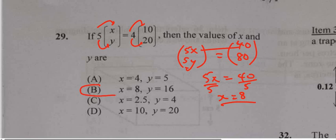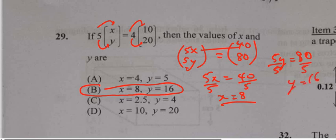Now this is the only option with 8, so I don't have to do the other one. But if we want to find it, we say 5y equals 80. Divide both sides by 5, we get the y value, 16.